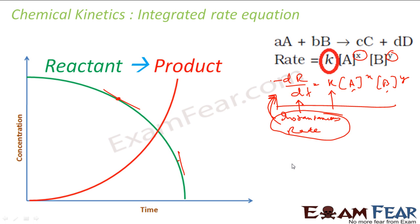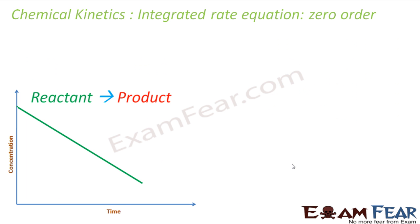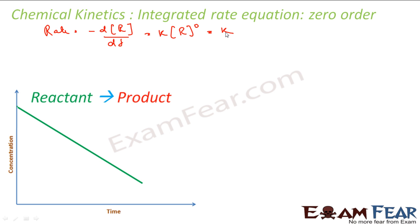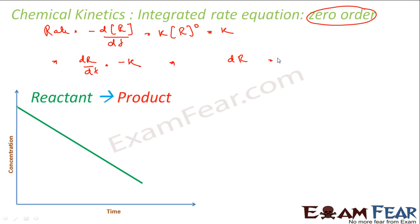We will do this for zeroth and first order only. For a zero order reaction — reactant to product — the rate is nothing but minus d[R]/dt, which equals k·[R]^0, and that is nothing but k, because it is a zero order equation. So d[R]/dt is nothing but minus k.